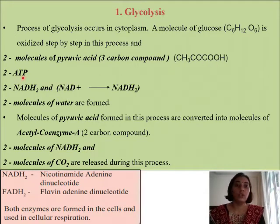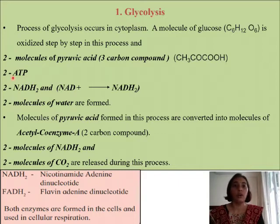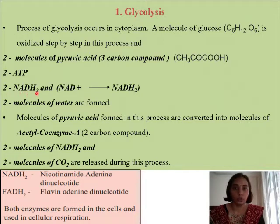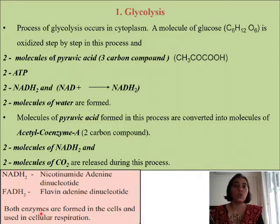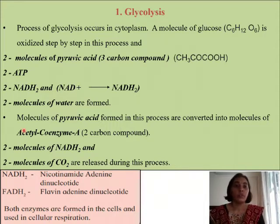Along with pyruvic acid, we are getting two ATP molecules — that is the energy-rich molecules, adenosine triphosphate. Two molecules of ATP are obtained. We also get two molecules of NADH2. NADH2 stands for nicotinamide adenine dinucleotide. So two molecules of NADH2 are obtained. It is a coenzyme that is going to be formed inside the cells and used for cellular respiration.